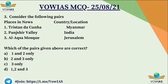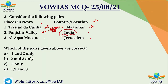Third question — consider the following pairs of places and their countries or locations: first, Tristan da Cunha; second, Panjshir Valley; third, Al-Aqsa Mosque — matched with Myanmar, India, and Jerusalem respectively. Which pairs are correctly matched? Tristan da Cunha is an island in the Atlantic Ocean belonging to Britain — so the first pair is wrong. Panjshir Valley is located in Afghanistan — so the second pair given as India is wrong. The Al-Aqsa Mosque is in Jerusalem — so option C, 3 only, is the correct answer.